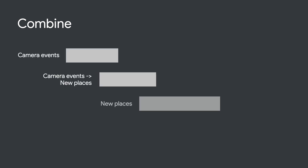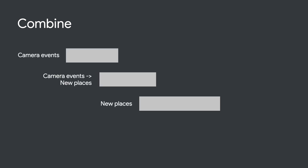Applying Combine concepts to the app I'm building, we can represent camera events as a publisher so that it emits whenever the camera goes idle. We can then apply an operator on that event to transform camera idle events to new places around the new camera position. And finally, subscribe to that chain of events and update the map with new places.